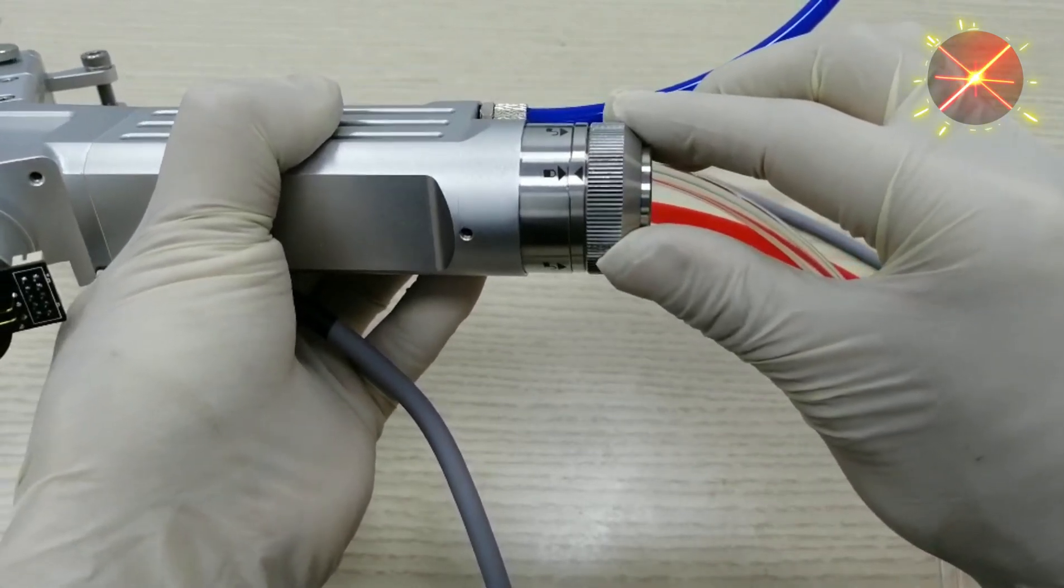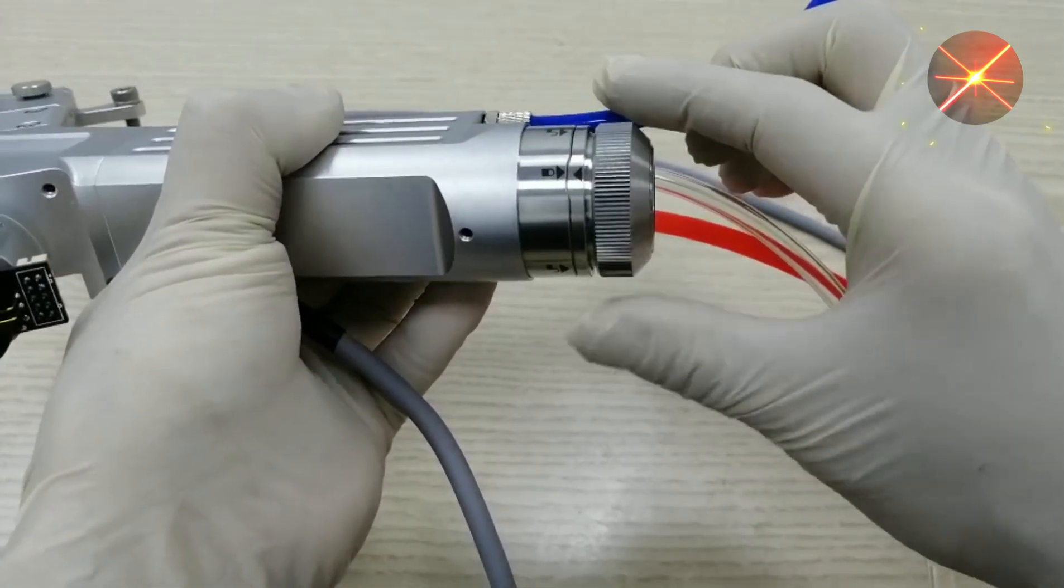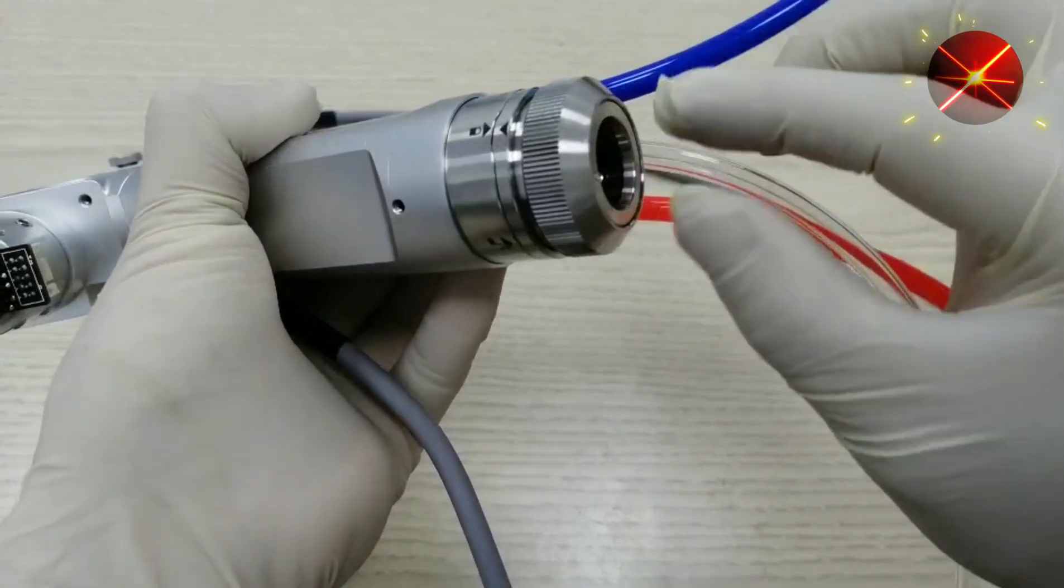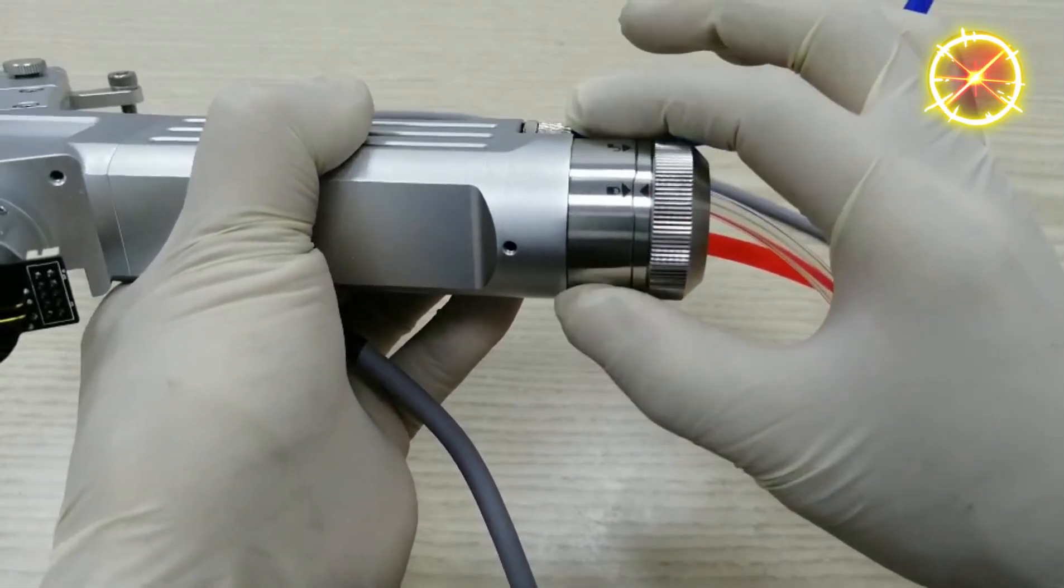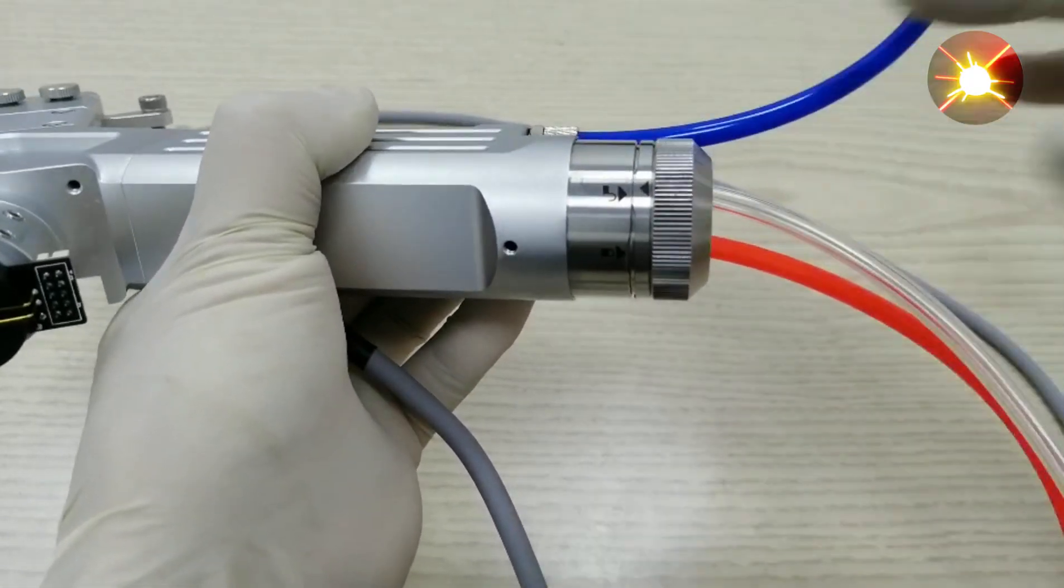Rotate the locking ring counterclockwise. Screw down to the bottom, pull it out, and turn counterclockwise to the unlocked position.